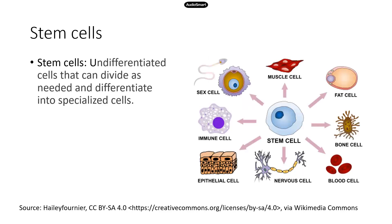Now totipotent cells are basically a group of stem cells. So what are stem cells? These cells are very powerful — they are undifferentiated cells, but they can divide and grow into specialized cells. So if you look at the picture on the right, if this is a stem cell, it has the ability to differentiate into all kinds of body cells.